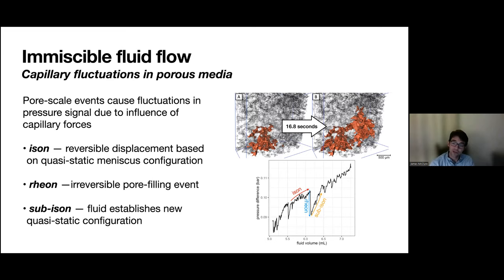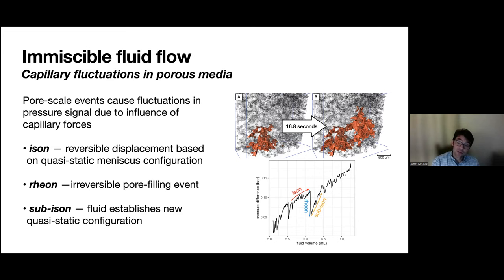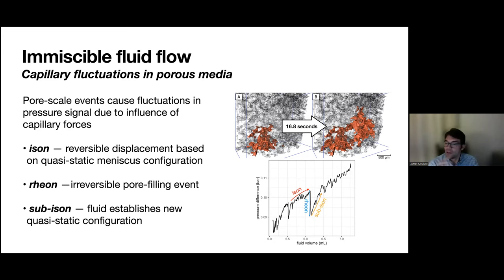Haines jumps cause up-and-down jumps in the pressure difference across the sample. Imbibition involves pushing the meniscus into a pore throat — it makes its way through and jumps into the next one with a pressure drop, then works into the next range of pore necks establishing new quasi-static configurations. With the time average, you're trying to get rid of these fluctuations in time.